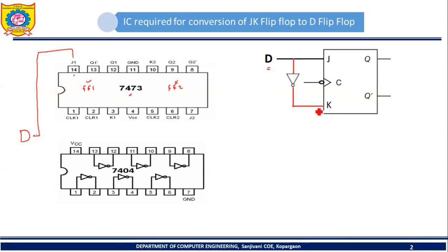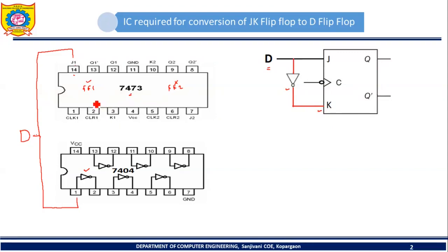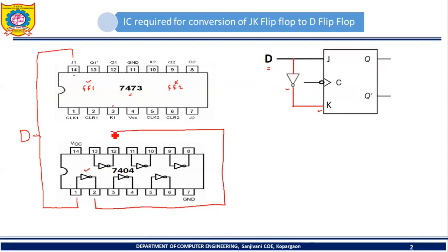K is getting the output of the NOT gate, and the input to that NOT gate is D. So I will connect D to the input of one of the NOT gates. We have six NOT gates in 7404; let's use the first NOT gate. I will connect D to pin number 1 — that is, the input of the first NOT gate in 7404. The output of that NOT gate, pin number 2, should then be connected to pin number 3 of 7473, which is the K input of flip-flop 1.